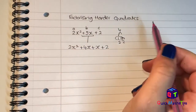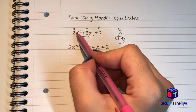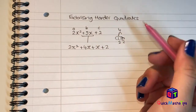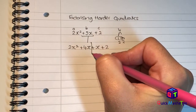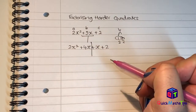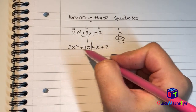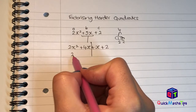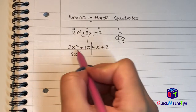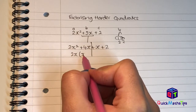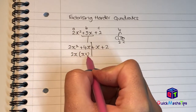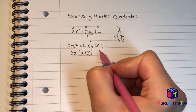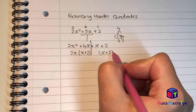All I've done is found two numbers that multiply to give me a×c and add to give me b, and I've split b into those two different values. Now I'm going to split this right down the middle so I have two values at the front and two values at the end, and then factorise both sides individually into single brackets. What goes into 2x² and 4x? I can pull out a 2x. 2x² divided by 2x is x, and 4x divided by 2x is plus 2, so I have x + 2 inside my brackets. Because I have x + 2 inside my brackets on this side, I have to have x + 2 inside my brackets on that side.